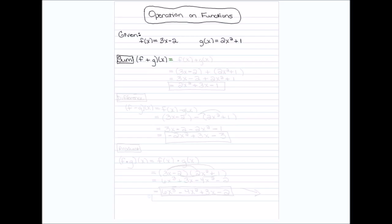The first operation we're going to talk about is sum. So if you see f plus g of x, that is the same thing as saying f of x plus g of x — you're adding the two functions together. I'm going to take what f of x is equal to and add it to what g of x is equal to. There's nothing to distribute here, so I get 3x minus 2 plus 2x squared plus 1. Combining like terms in descending order: 2x squared plus 3x, and negative 2 plus 1 gives negative 1. This is my final answer for the sum of two functions.